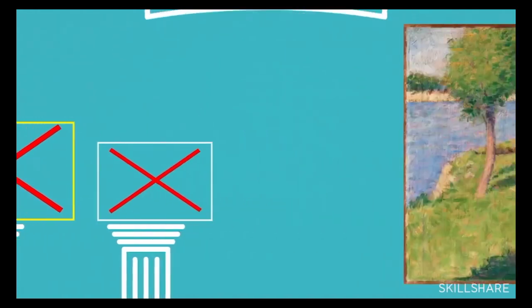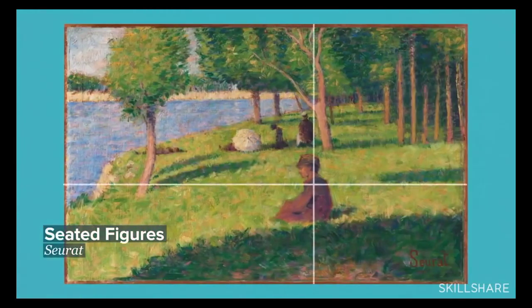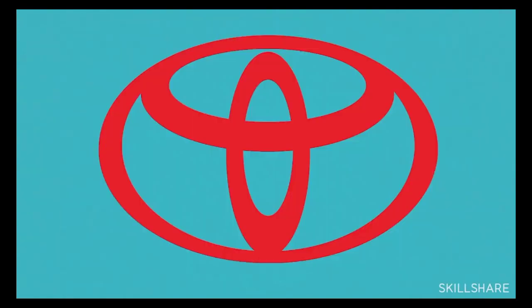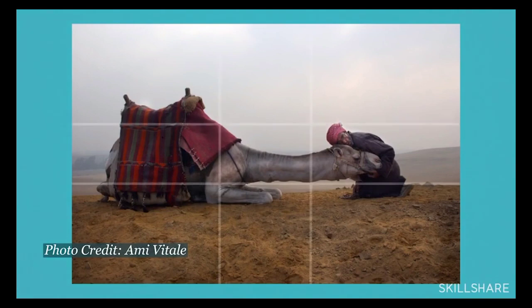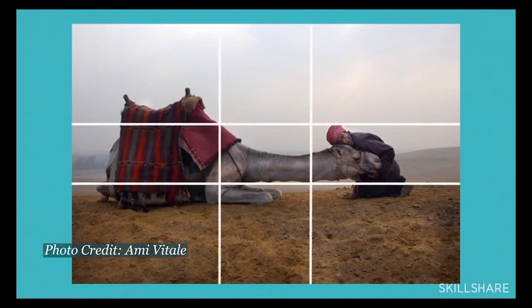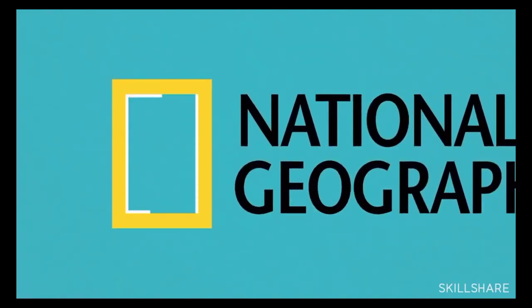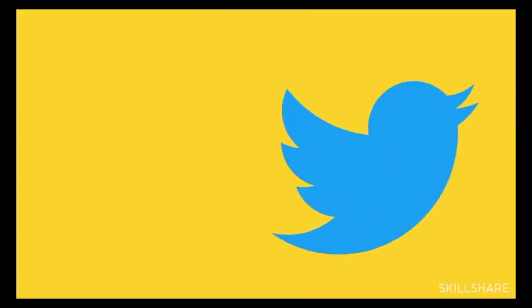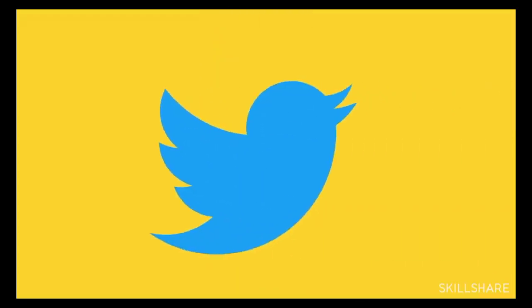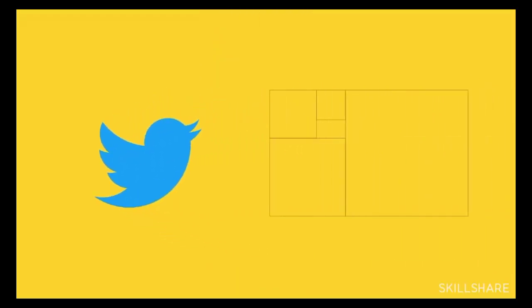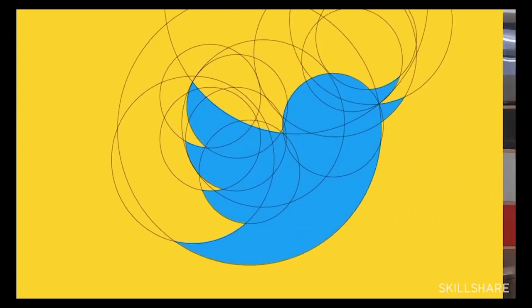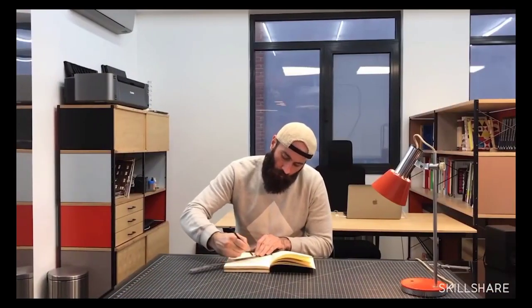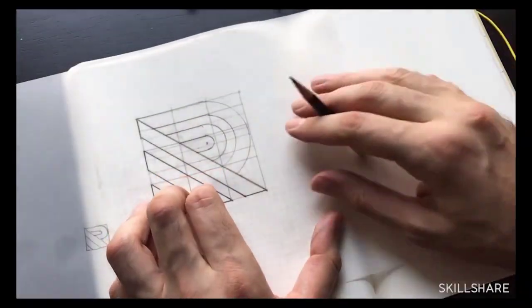That said, ultimate truth may not matter. For artists and designers, the Golden Ratio can still be a powerful tool for creating aesthetically pleasing designs. Take the Twitter logo — each part of the logo can be defined by circles that align to the Golden Ratio. Graphic designer George Bakua is known for modern, minimalist logos for clients and brands all over the world.